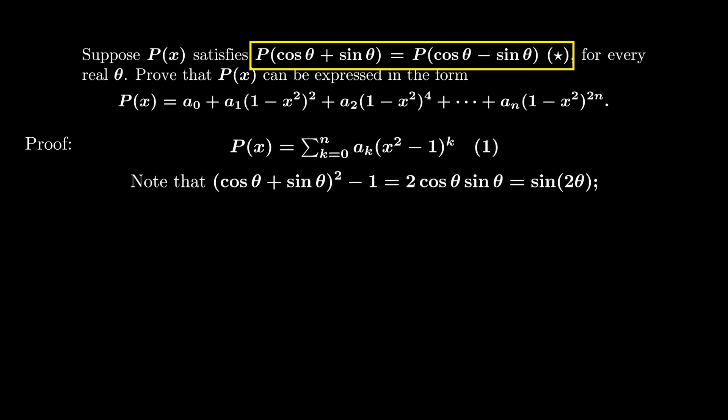Finally note that (cos θ + sin θ)² - 1 = sin(2θ). And similarly, (cos θ - sin θ)² - 1 = -sin(2θ). This means if we apply the condition (★) to equation (1), we get a polynomial of sin(2θ) equals to zero.